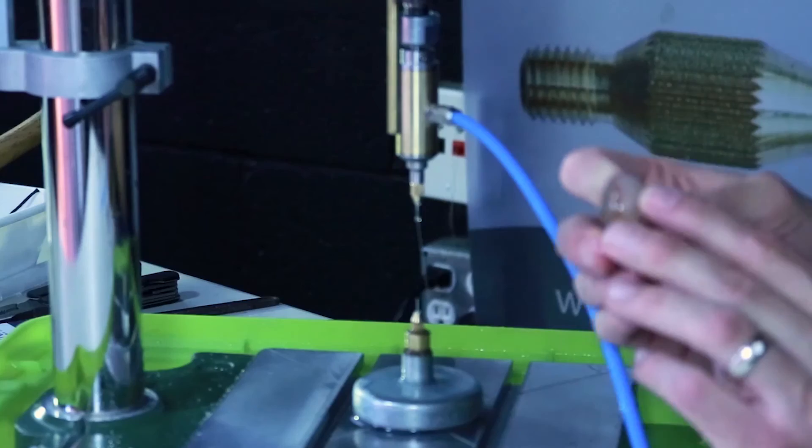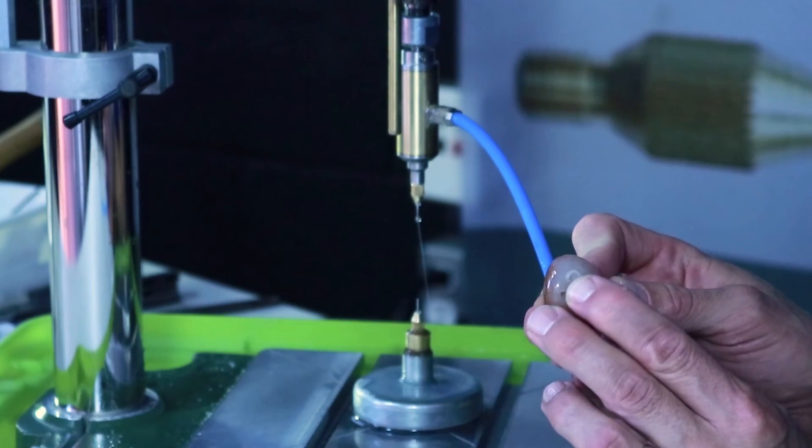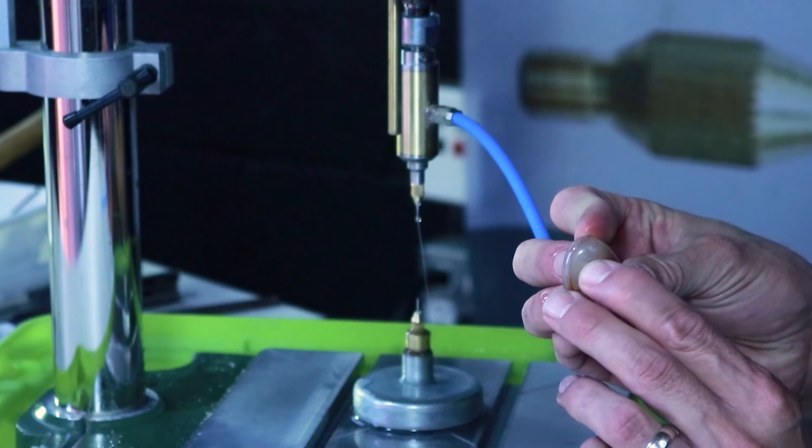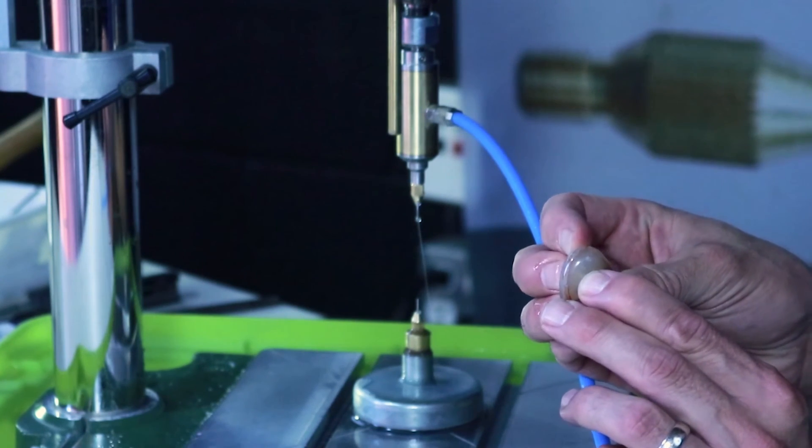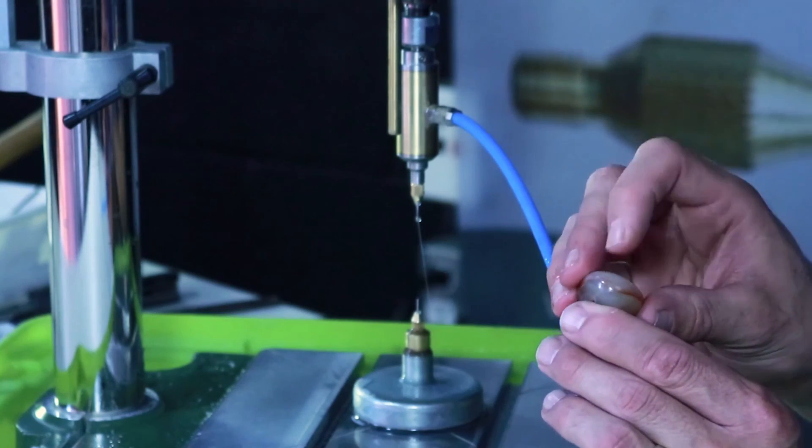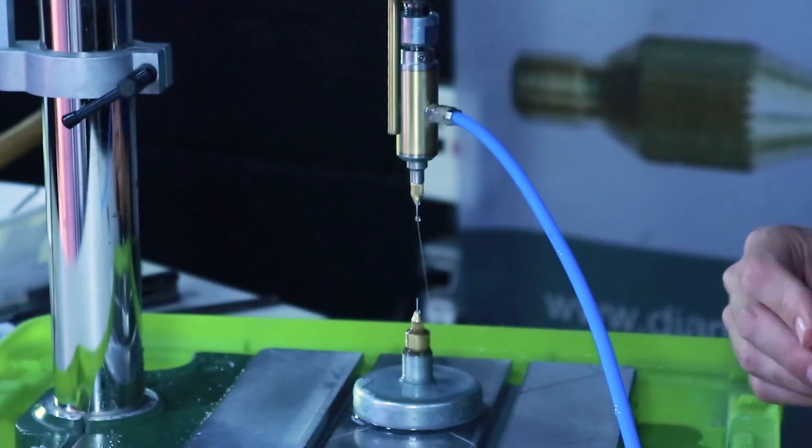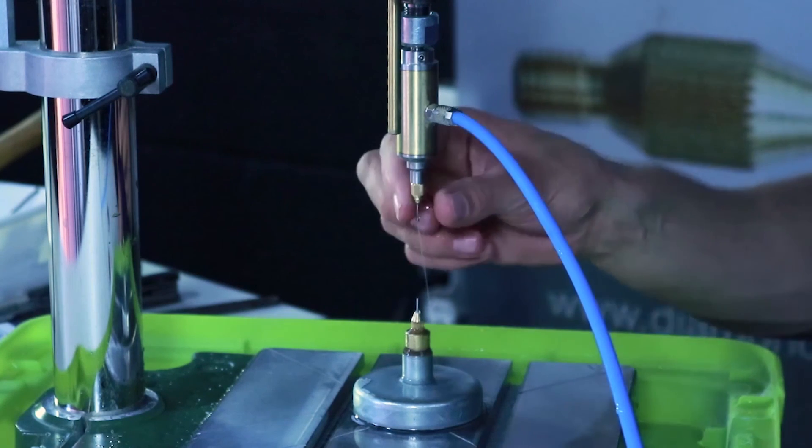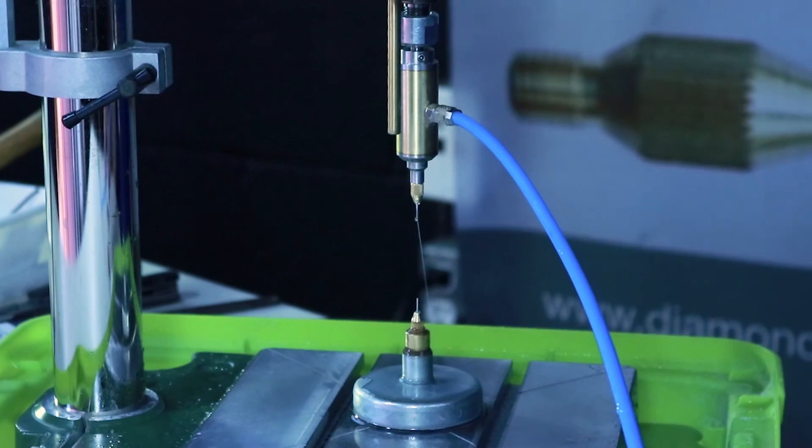As you can see there's a tiny little one millimeter hole there, all the way through, perfectly centered because I drilled from both sides. There's no chip on the back side if I were to drill all the way through. There you have it, a one millimeter hole in three different hard stones. Thanks for watching.